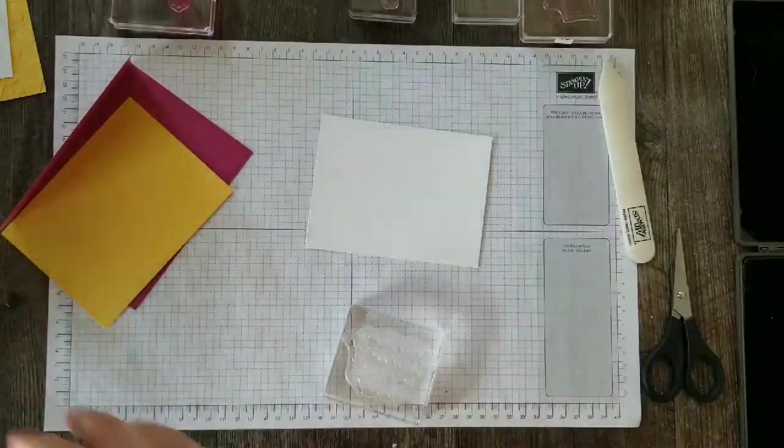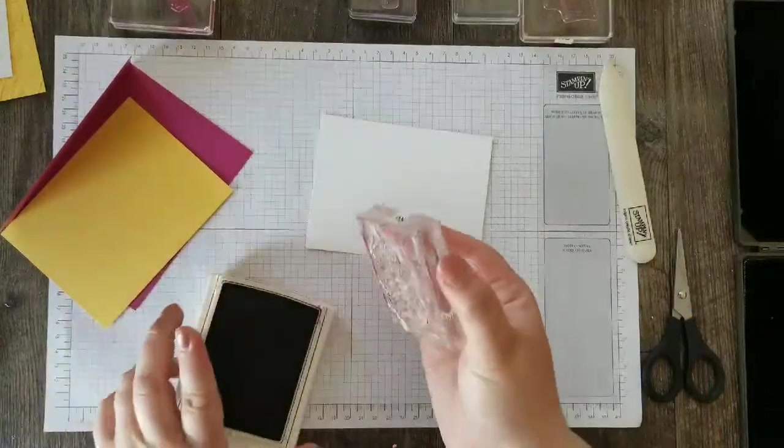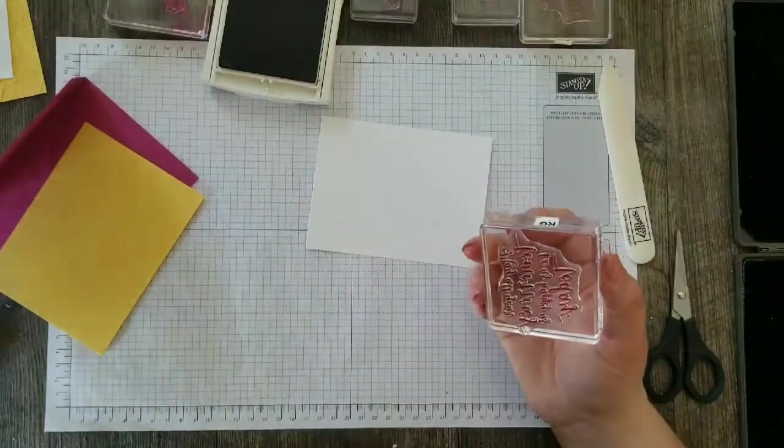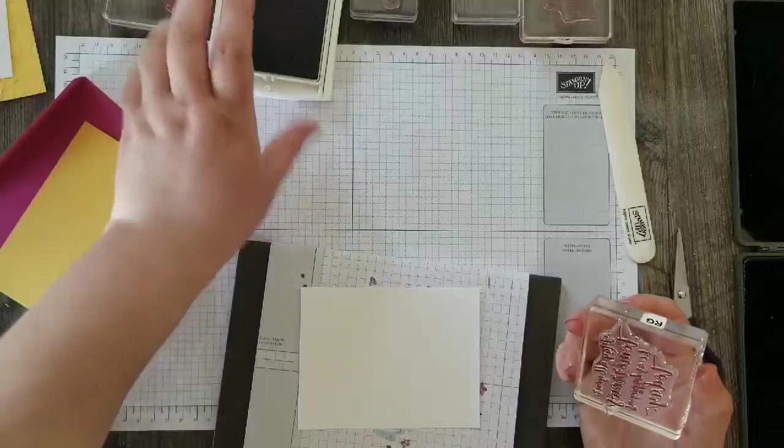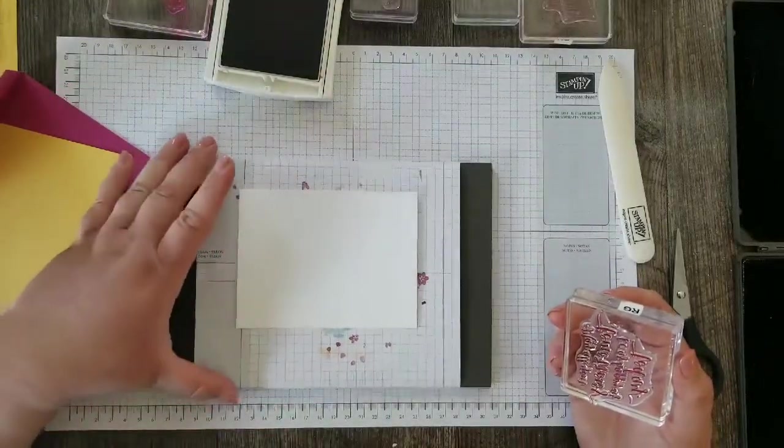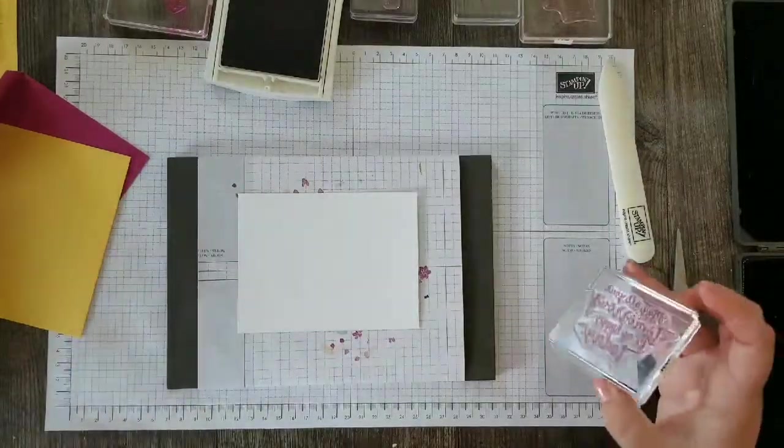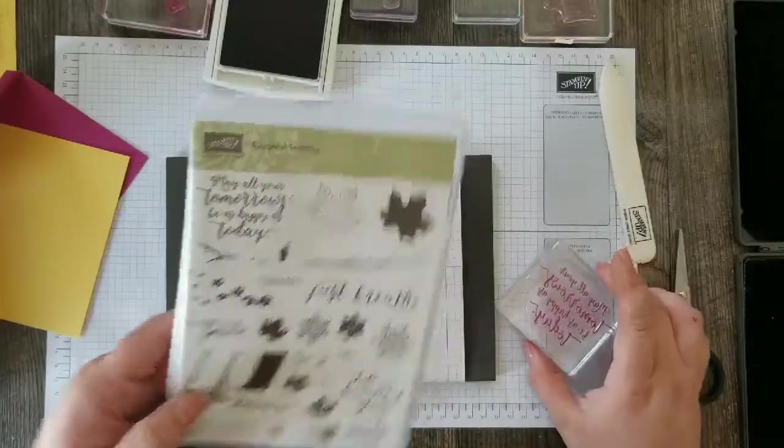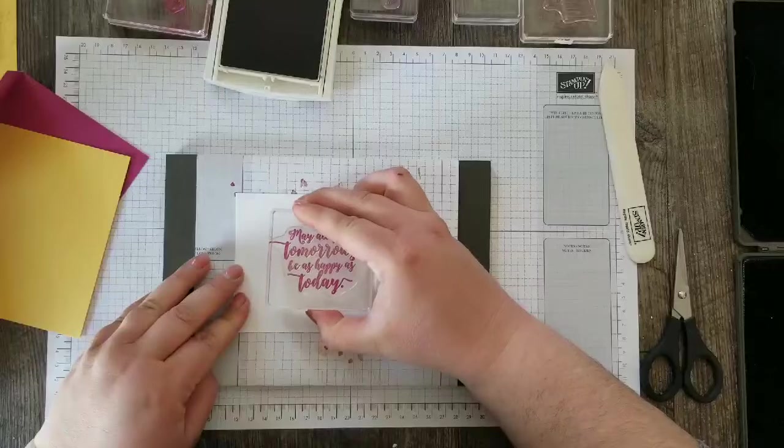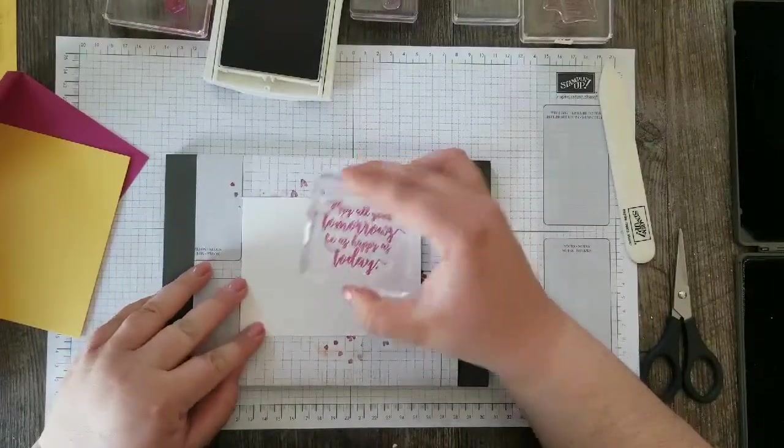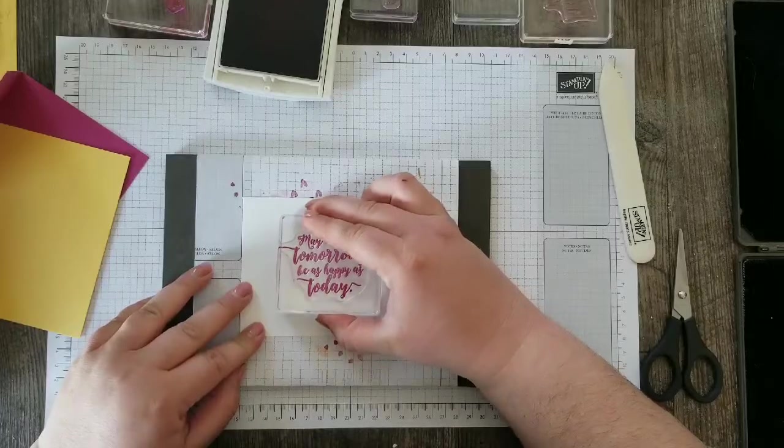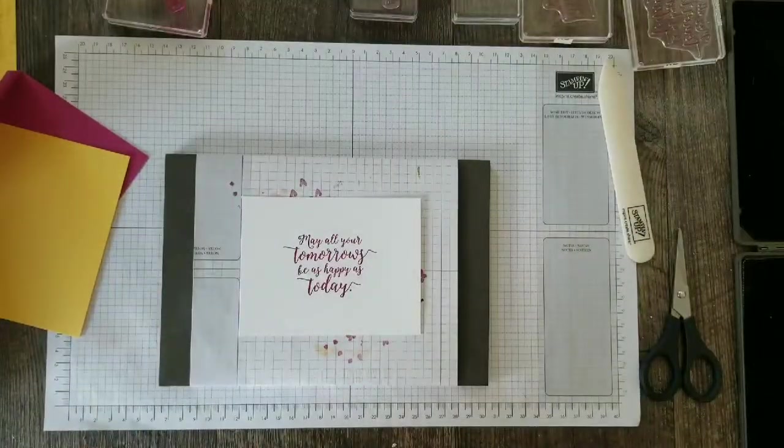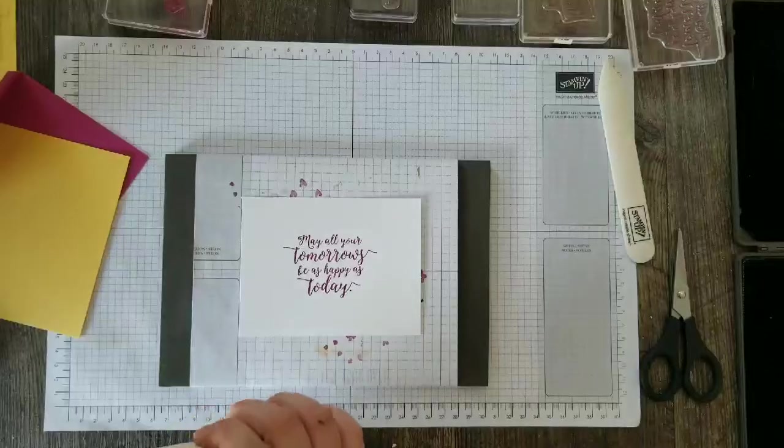The first thing I want to do, I like to stamp my greeting first when I do the inside of a card so I can layer the other images around that. So I'm using the Colorful Season stamp set and the sentiment I'm using for the inside is may all your tomorrows be as happy as today. I'm going to line this up, stamp it in the center here. I'm stamping that in Berry Burst.